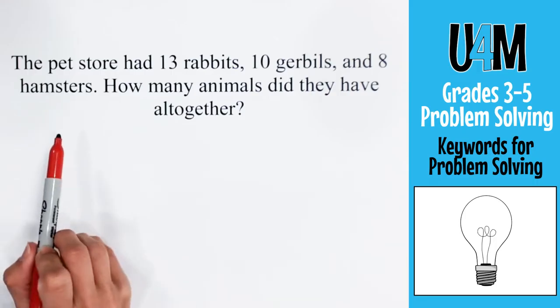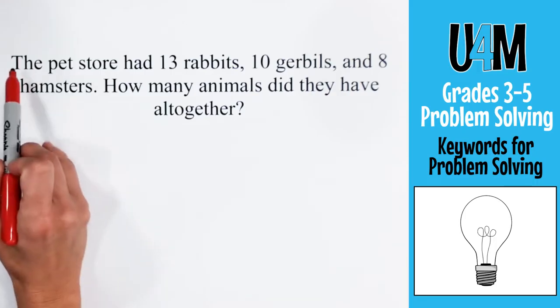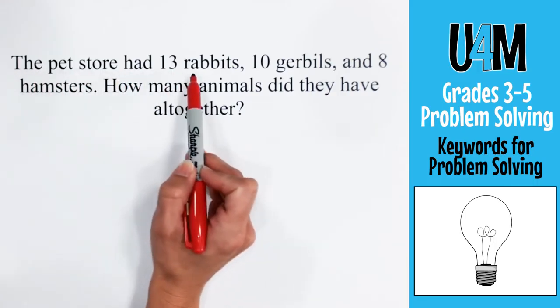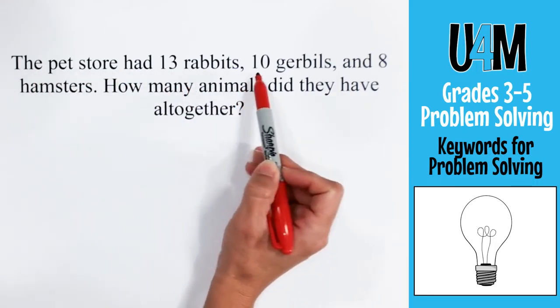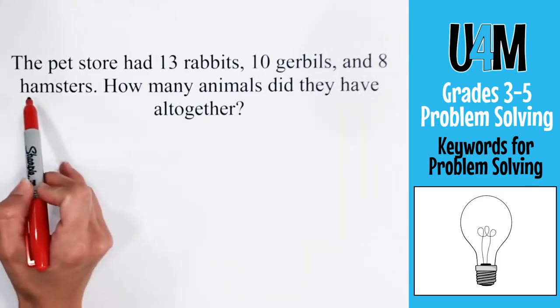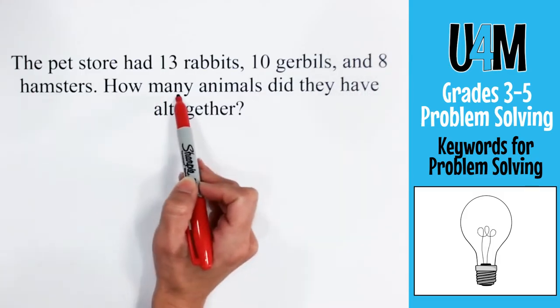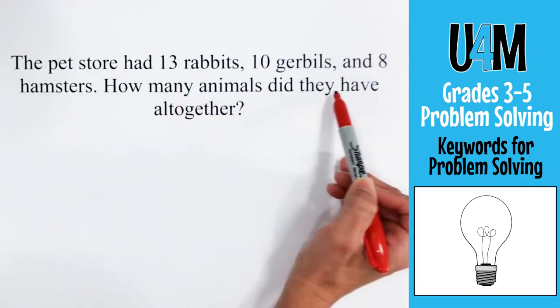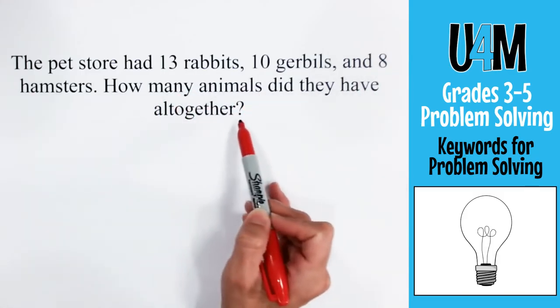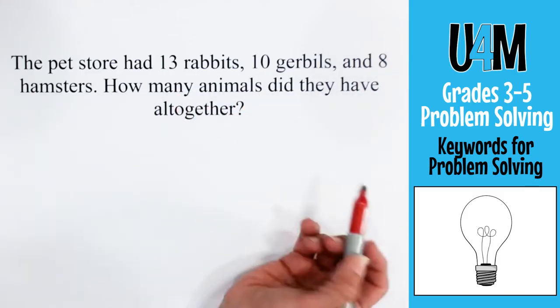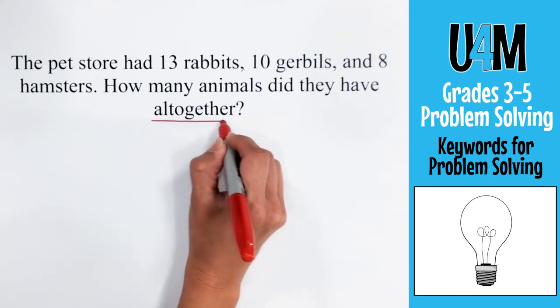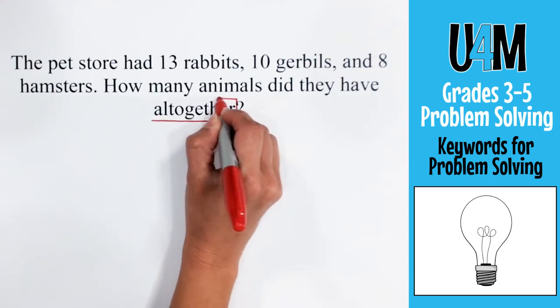So let's take a look at a word problem where we're going to see one of these addition keywords. In this problem we have: the pet store had 13 rabbits, 10 gerbils, and 8 hamsters. How many animals did they have all together? We can see that keyword right here is 'all together.'